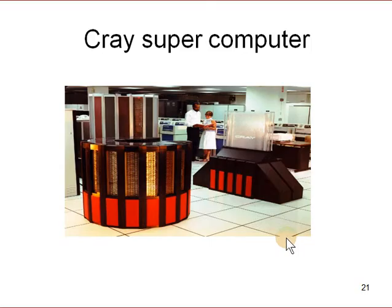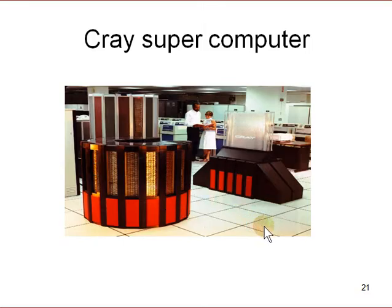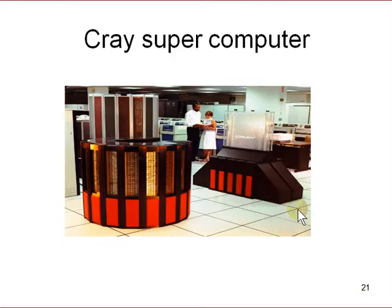This is a Cray supercomputer, from the 1980s or 1990s. It can do a lot of calculations very quickly, measured in floating point operations per second — a different kind of operation than modern cloud computing. These are used for simulating engineering problems, atomic simulations, or weather patterns. Crays were and probably still are very expensive; a large part of the cost was the coolant needed to cool the CPUs because they get really hot.